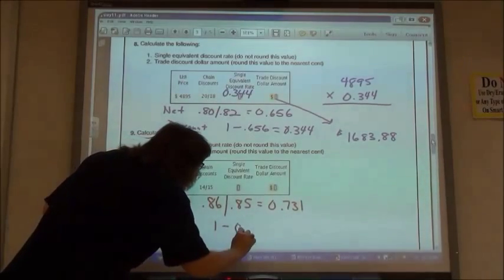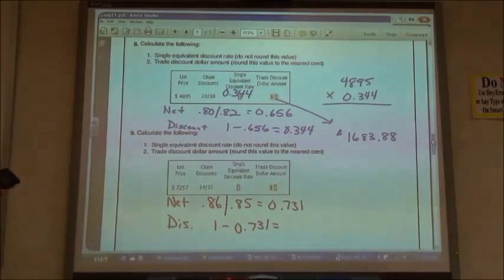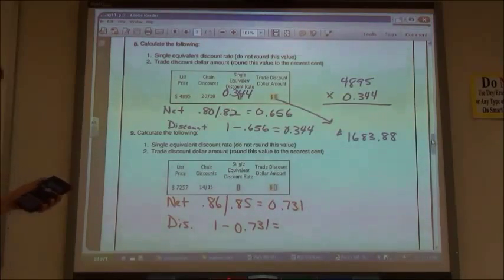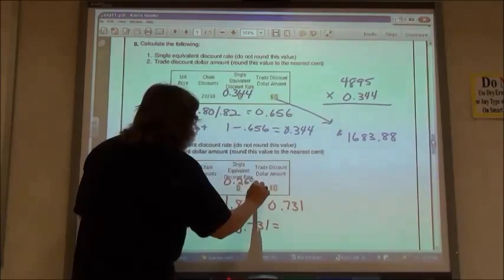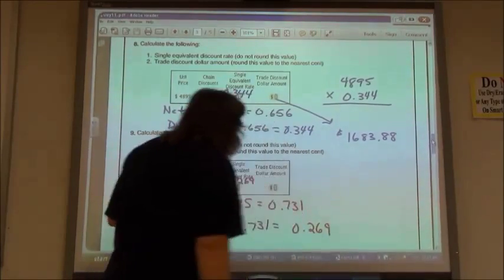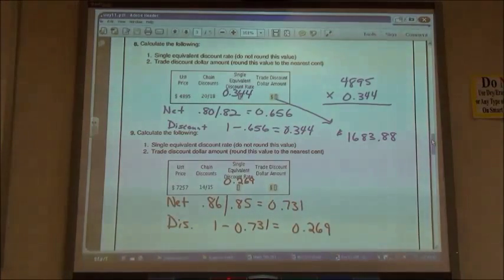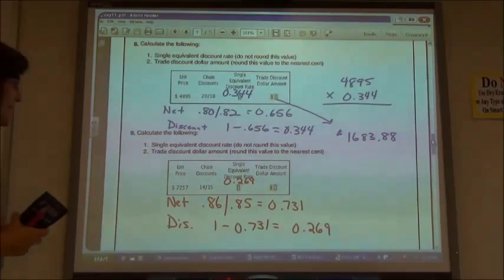I want to find out what my discount is. And so I'm going to take 1 minus 0.731. So if I take 100% minus that 0.731, the 73.1%, my net equivalent rate, 0.269. And since we're using it in a calculation, they don't change it back into a percent, but that's really what that means, is that I'm getting a 26.9% discount.